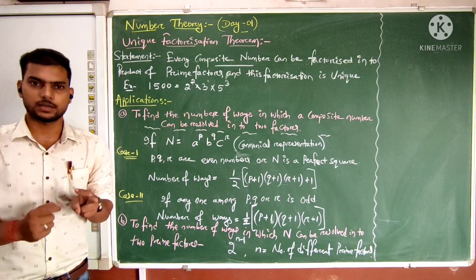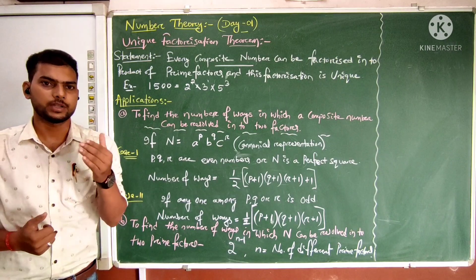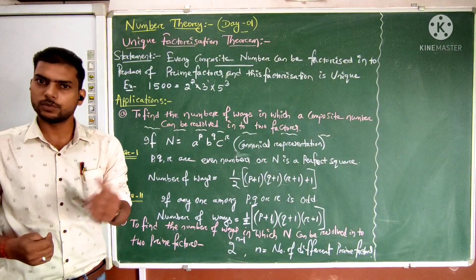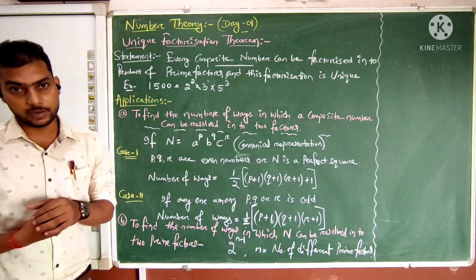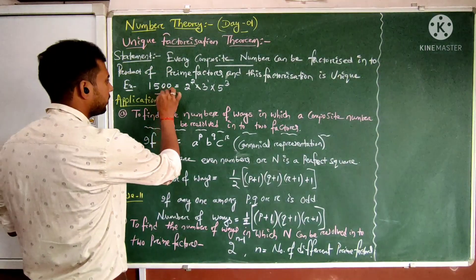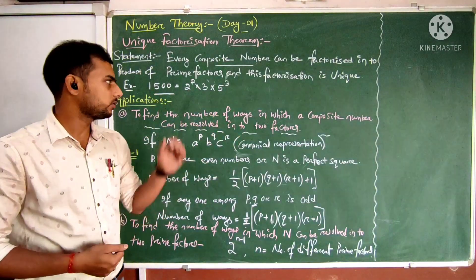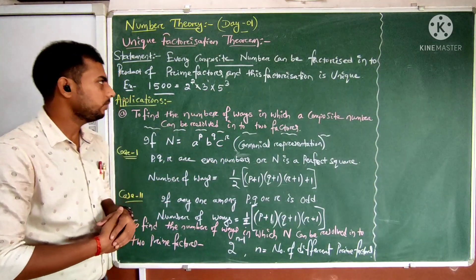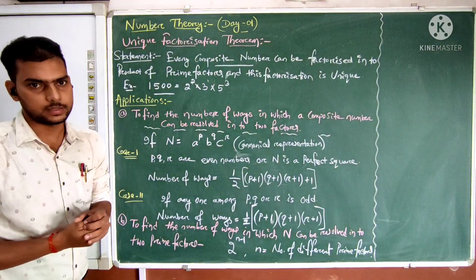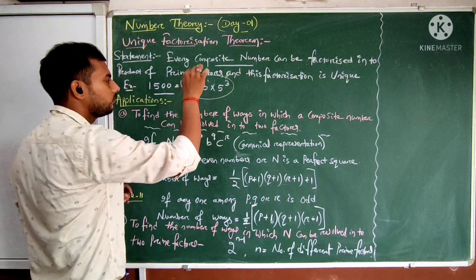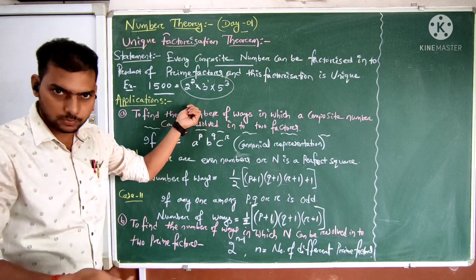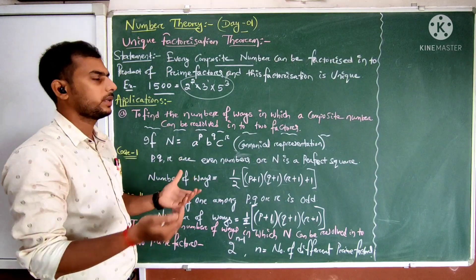Prime numbers are those whose only factors are one and itself — for example, 2, 3, 5, 7. Composite numbers are those which are not prime; they have factors other than one and themselves. For example, 1500 can be expressed as 2² × 3¹ × 5³. This factorization is unique — no one in this world can express 1500 using any other set of prime numbers. This uniqueness holds throughout all of mathematics.